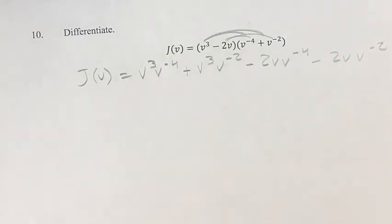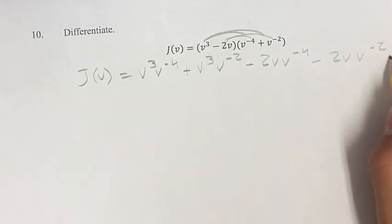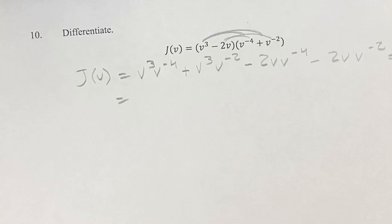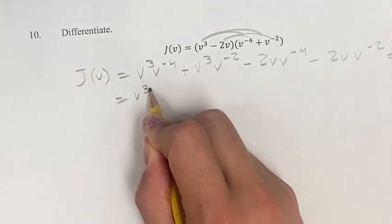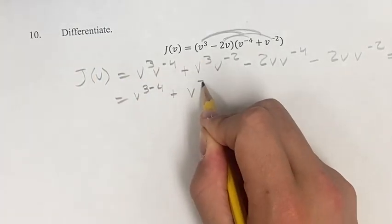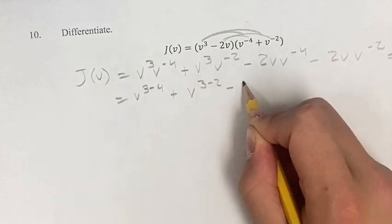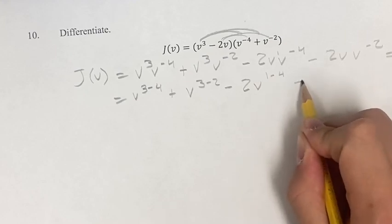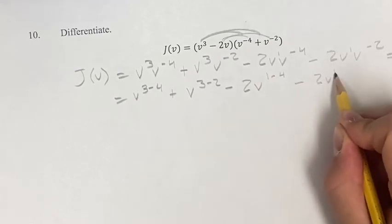Okay, so simplifying this out right here. When you are multiplying these two terms and they have the same base, you can add their exponents. So, we have v to the 3 minus 4 plus v to the 3 minus 2 minus, I think this is v to the 1, 2v to the 1 minus 4 minus 2v to the 1 minus 2.